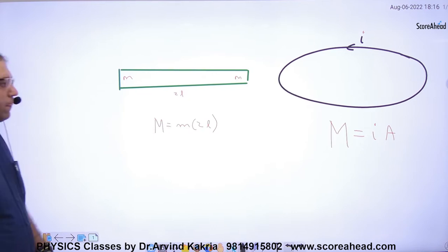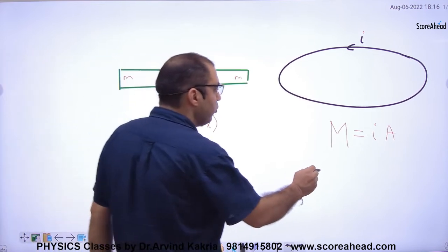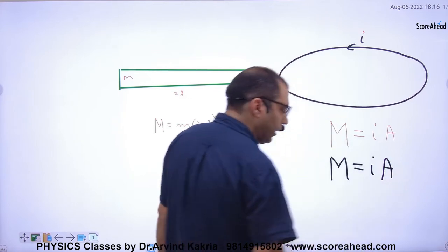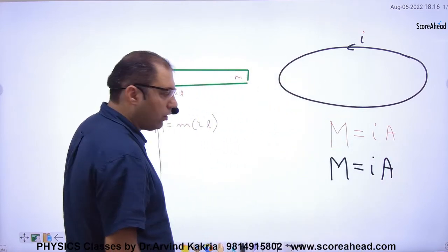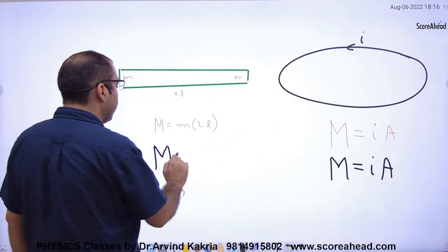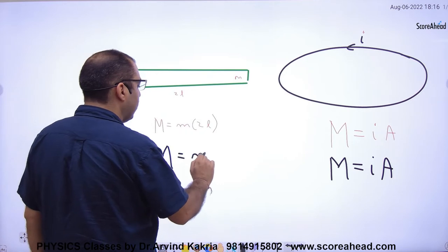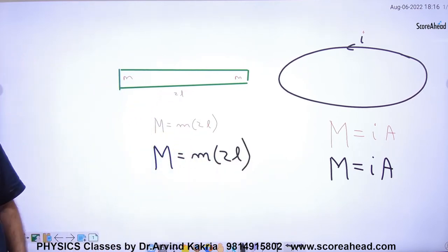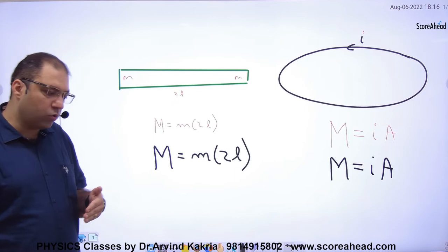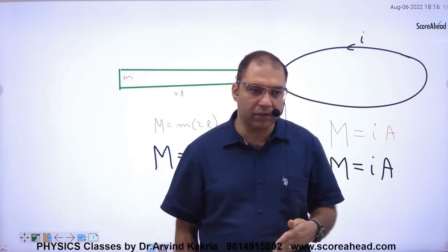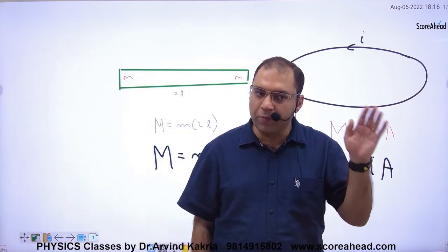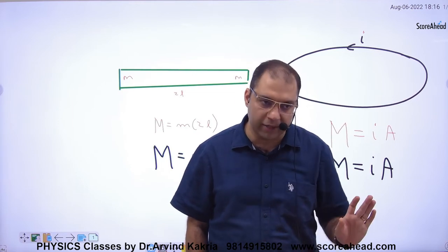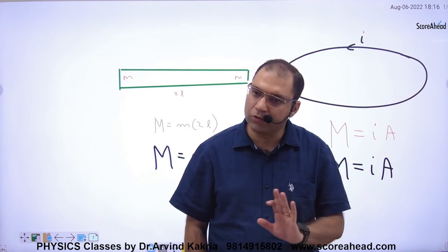So to summarize: for a current-carrying loop, capital M equals current into area. For a bar magnet, capital M equals small m into 2L. We now have two categories — either a current-carrying loop or a bar magnet — and we apply the appropriate formula for each.